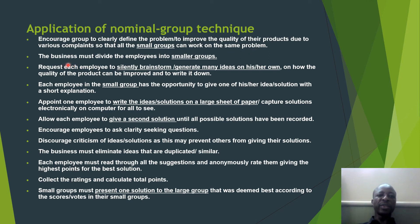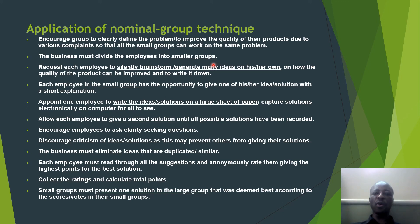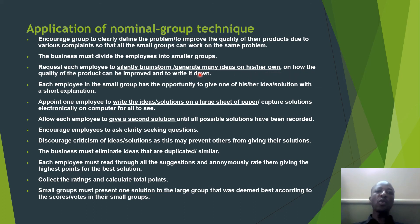The business must divide employees into smaller groups — that large group of workers must be divided into smaller groups, whereby each group is managed to four or five individuals. Then request each employee to silently brainstorm or generate many ideas on his or her own on how the quality of the product can be improved, and the ideas are supposed to be written down.